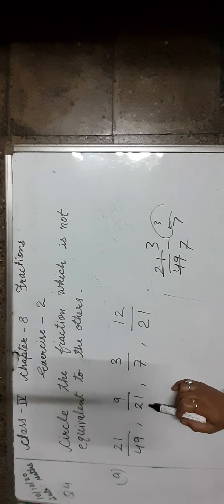Let us take the first fraction, 21 upon 49. Check the divisibility of 21 and 49 by the same number — it's 7. If we cancel by 7: 7 threes are 21, 7 sevens are 49. We get 3 upon 7. It means 21 upon 49 is equal to 3 upon 7. Now let us check the next fraction, 9 upon 21. If we cancel by 3: 3 threes are 9, 3 sevens are 21. We get 3 upon 7. So 9 upon 21 is also equal to 3 upon 7.